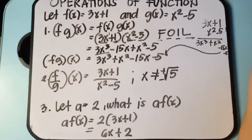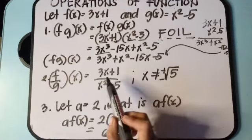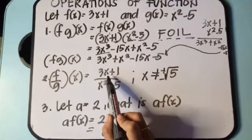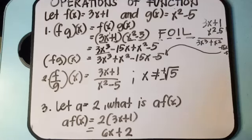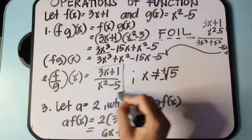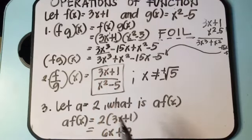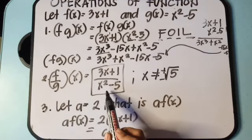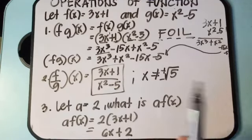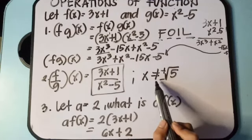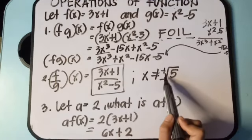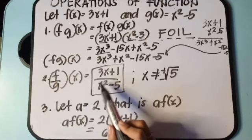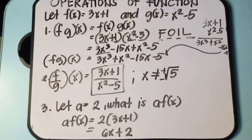For division, f of x divided by g of x is 3x plus 1 over x squared minus 5. That is already the answer since we cannot simplify this anymore — there is nothing we can cancel. Note that x is not equal to positive or negative square root of 5, because those values would give us an undefined answer.